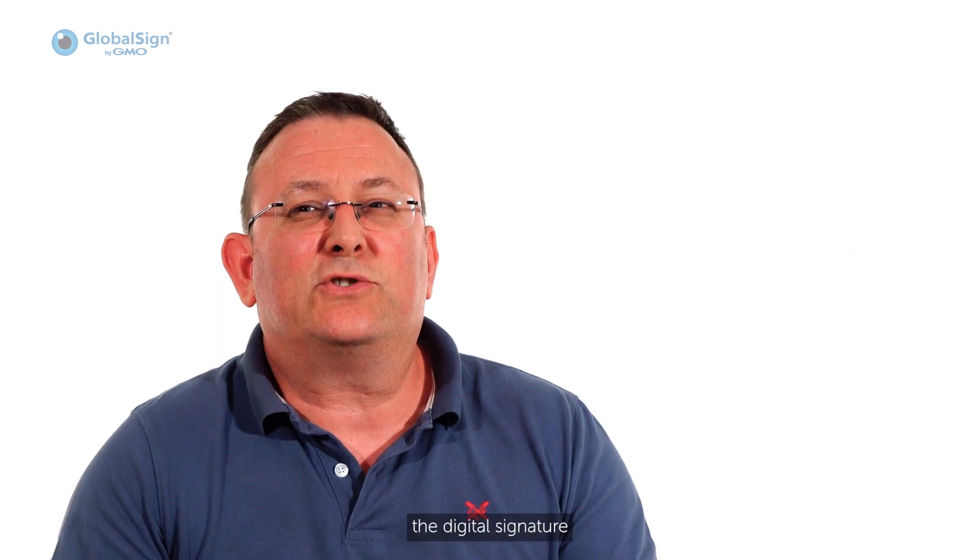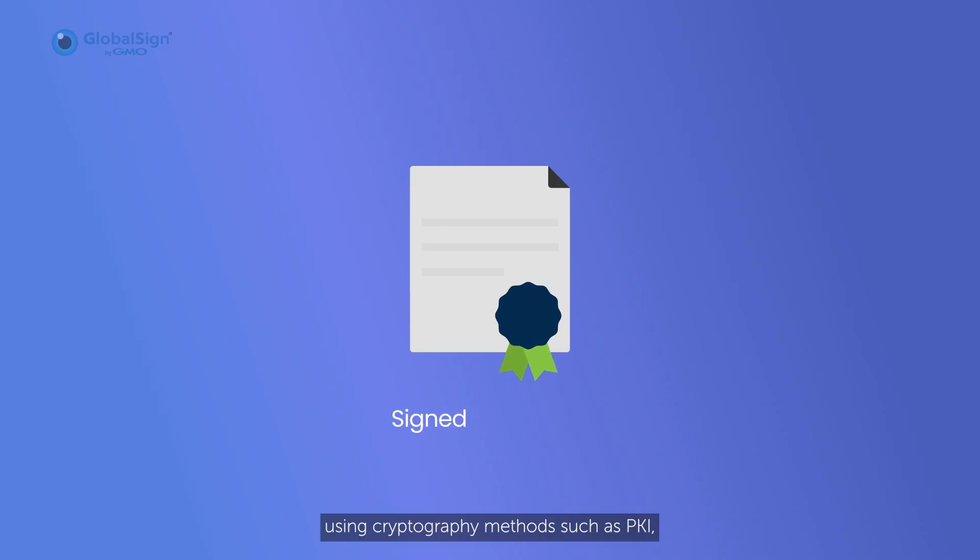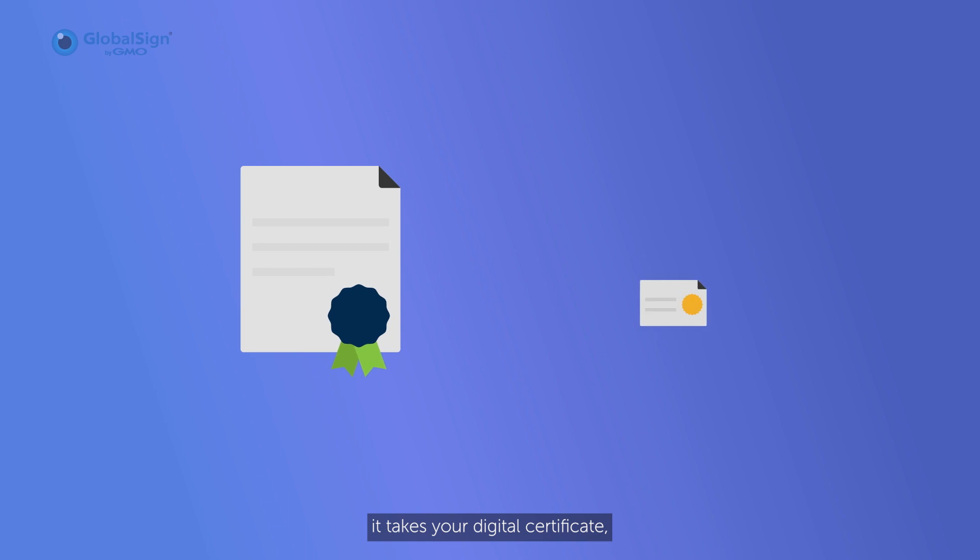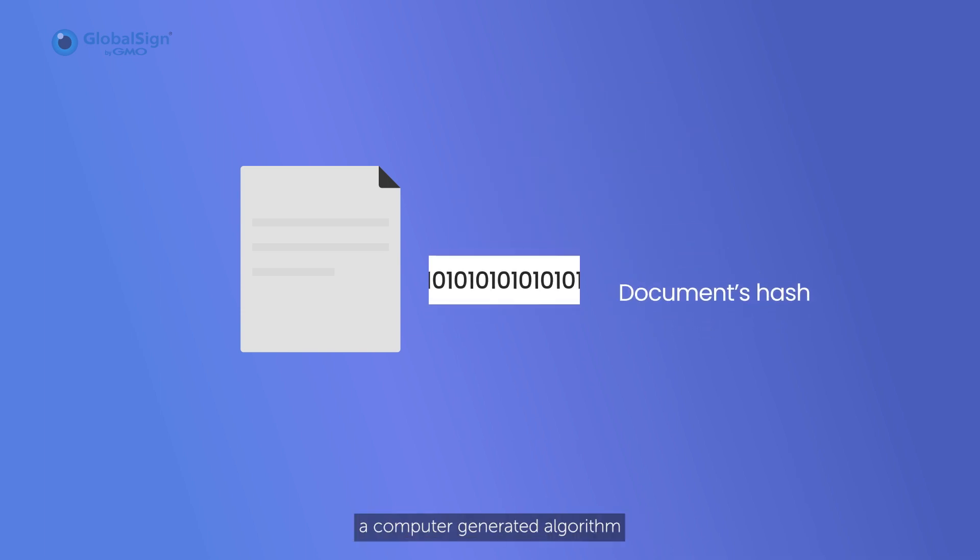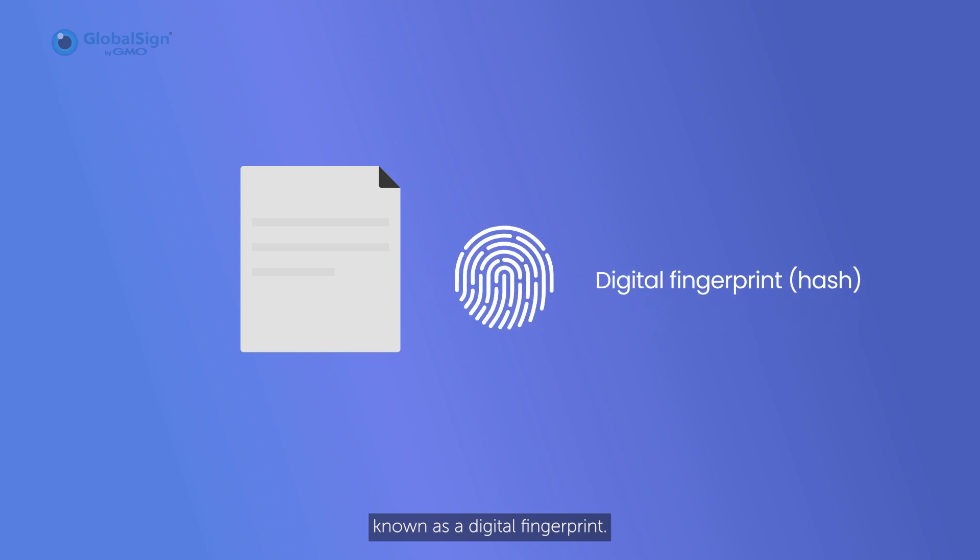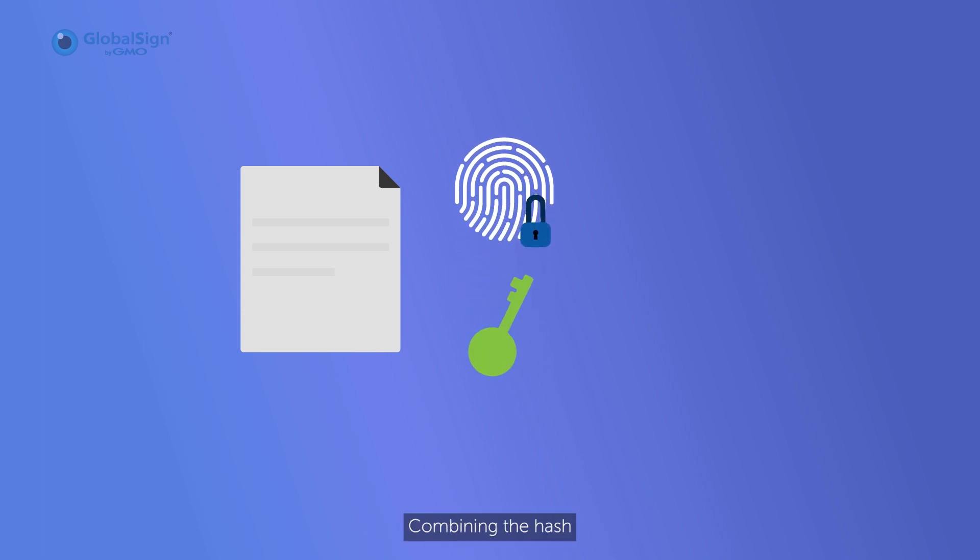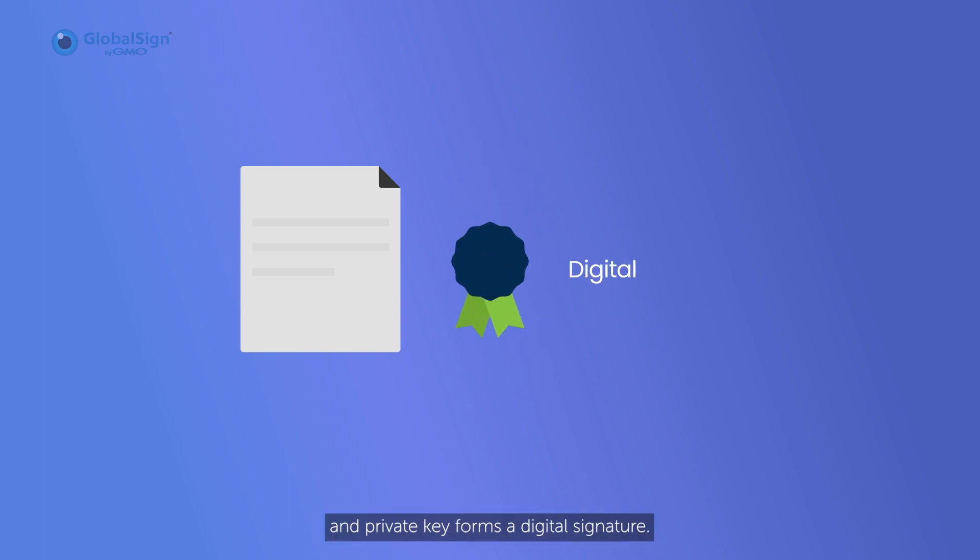When you apply a digital signature to a document using cryptography methods such as PKI, as I just mentioned, it takes your digital certificate, which is used to verify your identity, to create a hash of your document. Now, a hash is simply a computer-generated algorithm, or otherwise known as a digital fingerprint. This hash is then encrypted using the signer's private key. Combining the hash and the private key forms a digital signature.